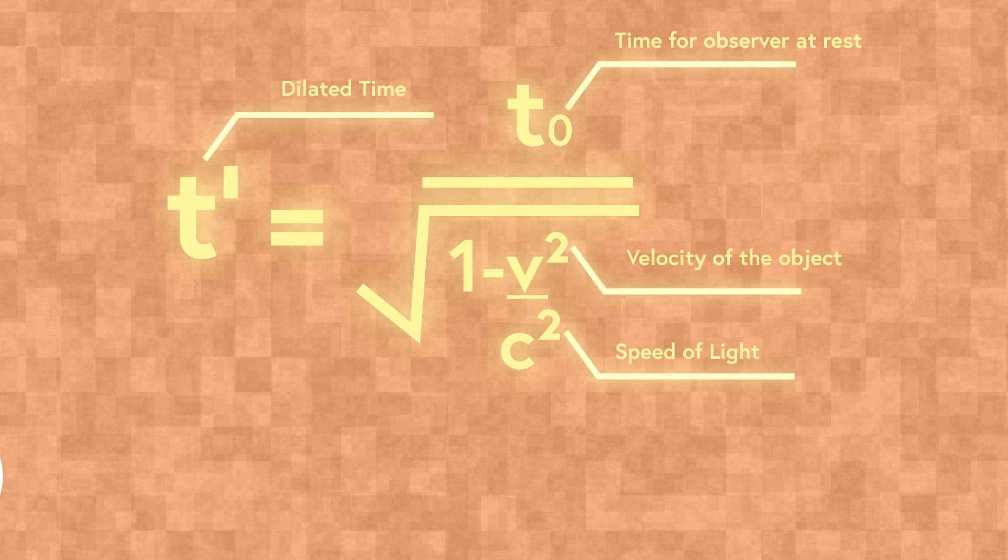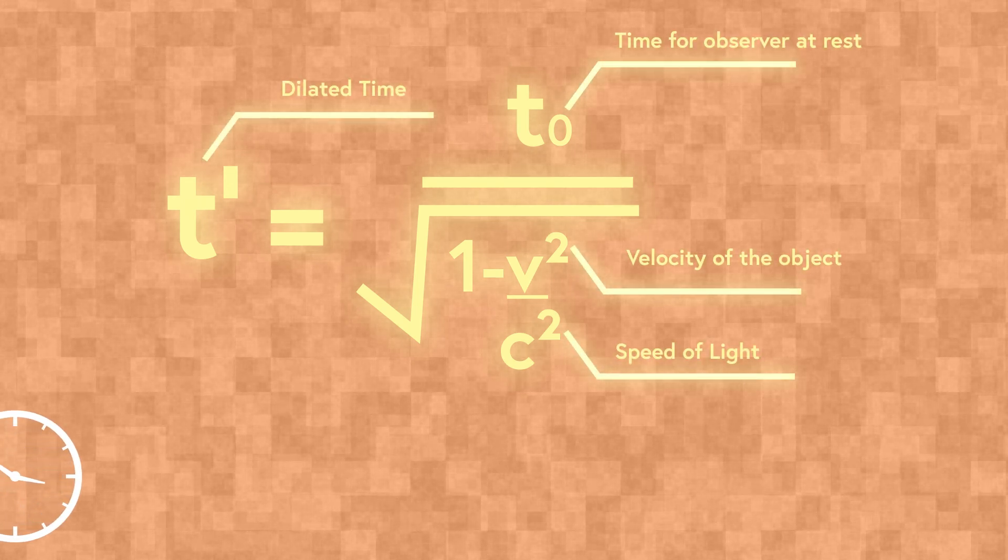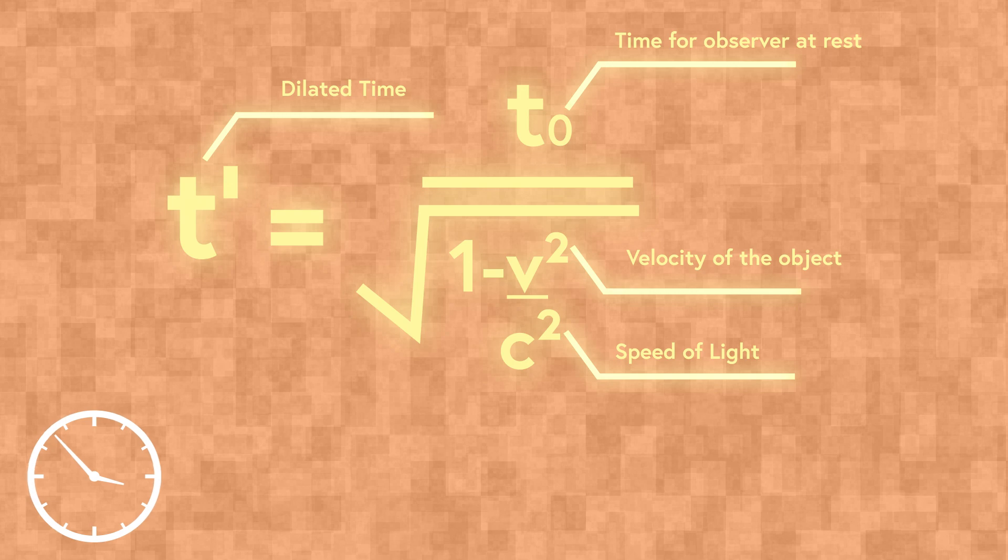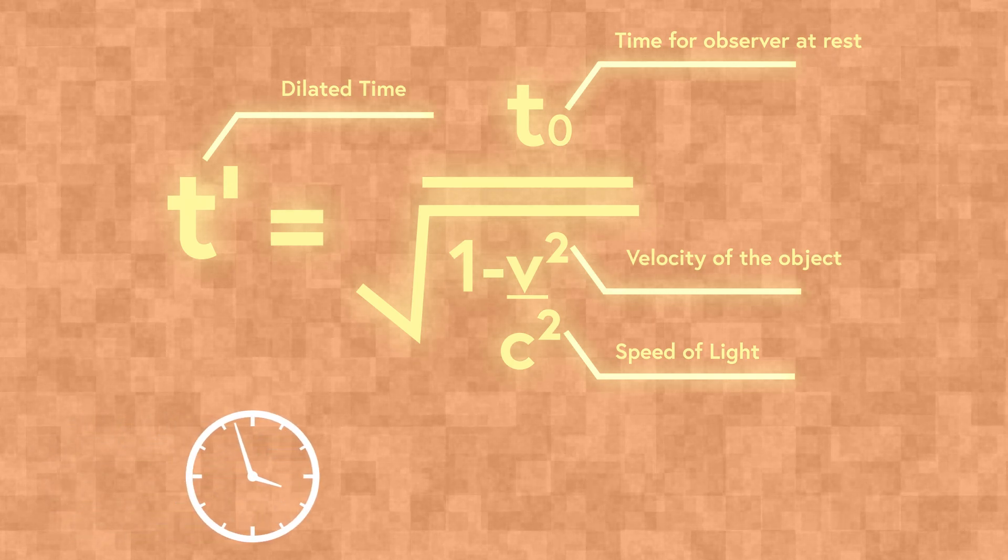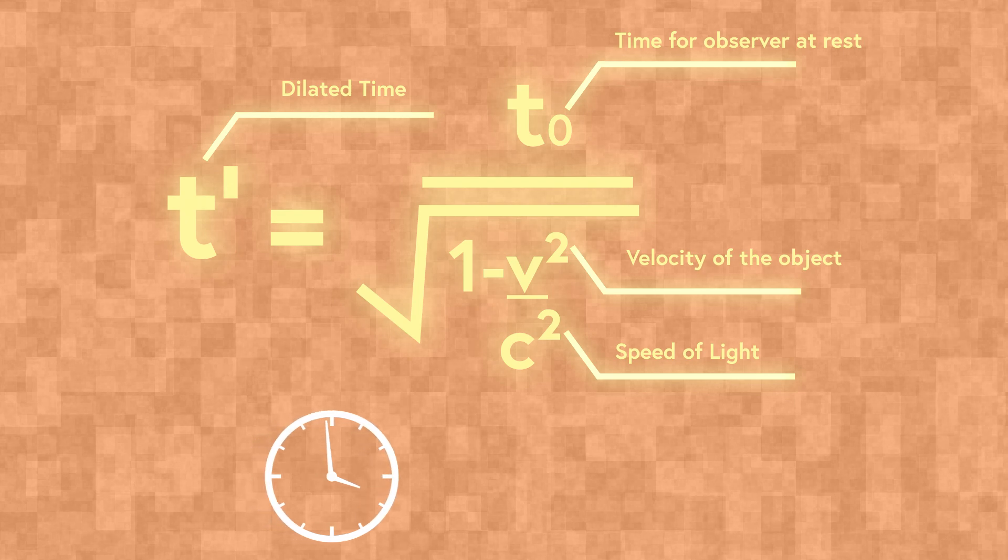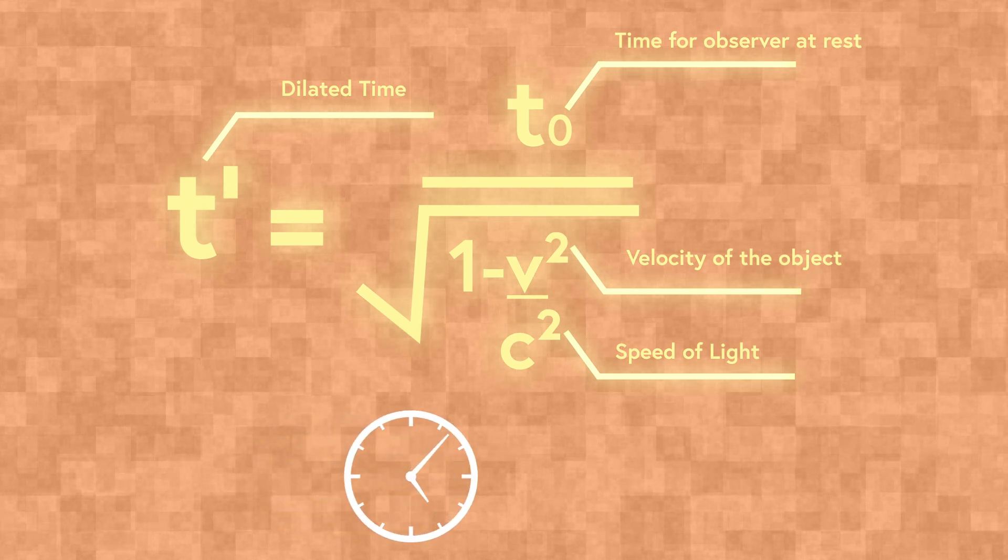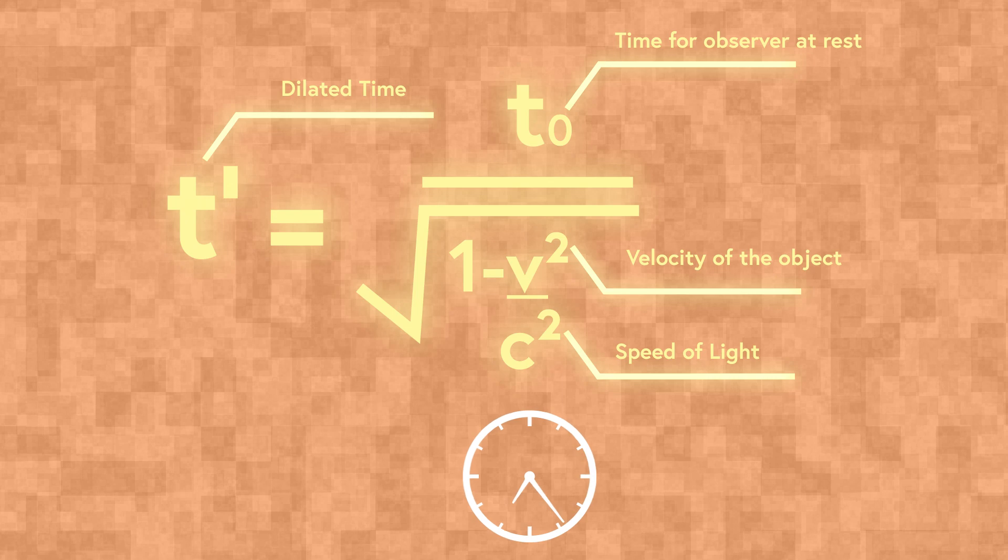In a universe where light travels slower, time dilation could be more extreme. Moving clocks would tick at an even slower rate compared to stationary ones. However, if light traveled faster, relativistic effects might shift, possibly altering time dilation.